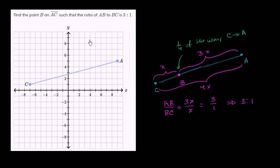For example, the horizontal change between A and C - A is at 9 right over here, and C is at negative 7. So this distance right over here is 9 minus negative 7, which is equal to 9 plus 7, which is equal to 16.